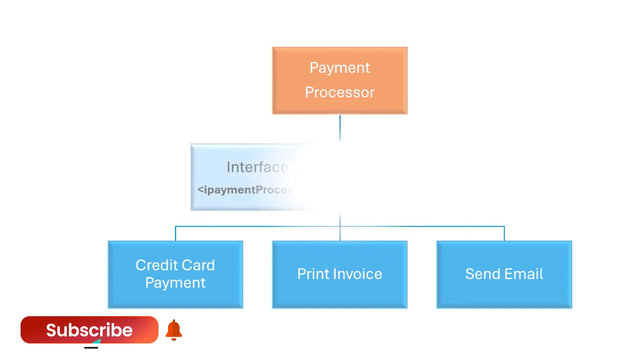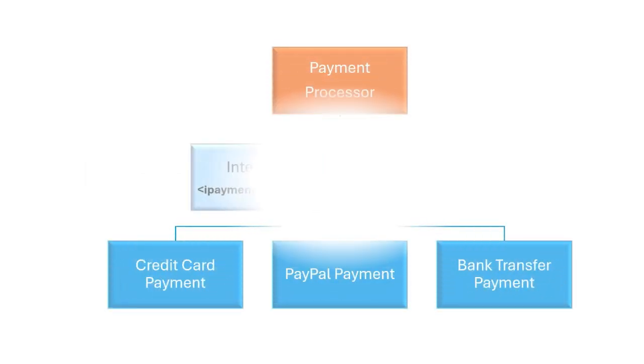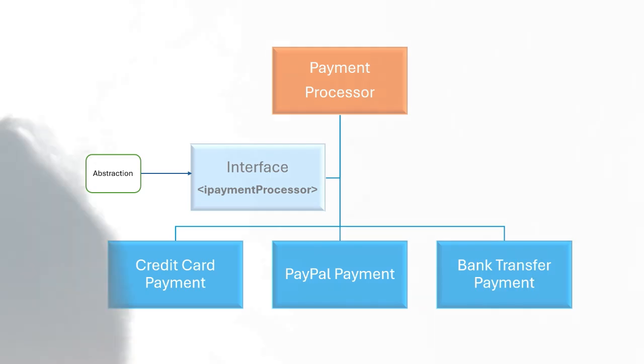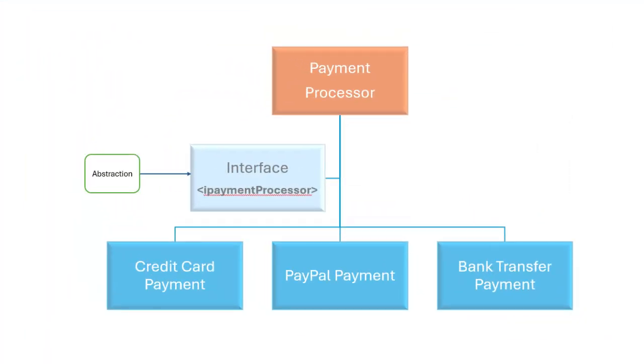To solve the problem of tight connections, we introduce something called an abstraction, like a general rule or interface called payment method. Instead of the payment processor directly depending on a specific payment method like credit card payment, it now depends on this payment method rule. Different payment methods, like credit card payment, PayPal payment, or bank transfer payment, can follow the same rule and connect to the payment processor through this abstraction.